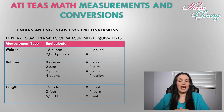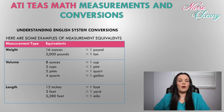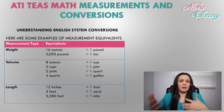For volume, 8 ounces is equal to one cup, two cups is equal to one pint, two pints is equal to one quart, and four quarts is equal to one gallon. For length, 12 inches is equal to one foot, three feet are equal to one yard, and 5,280 feet is equal to one mile. That last one's not really important, but it helps grasp the concept of measurement equivalents.